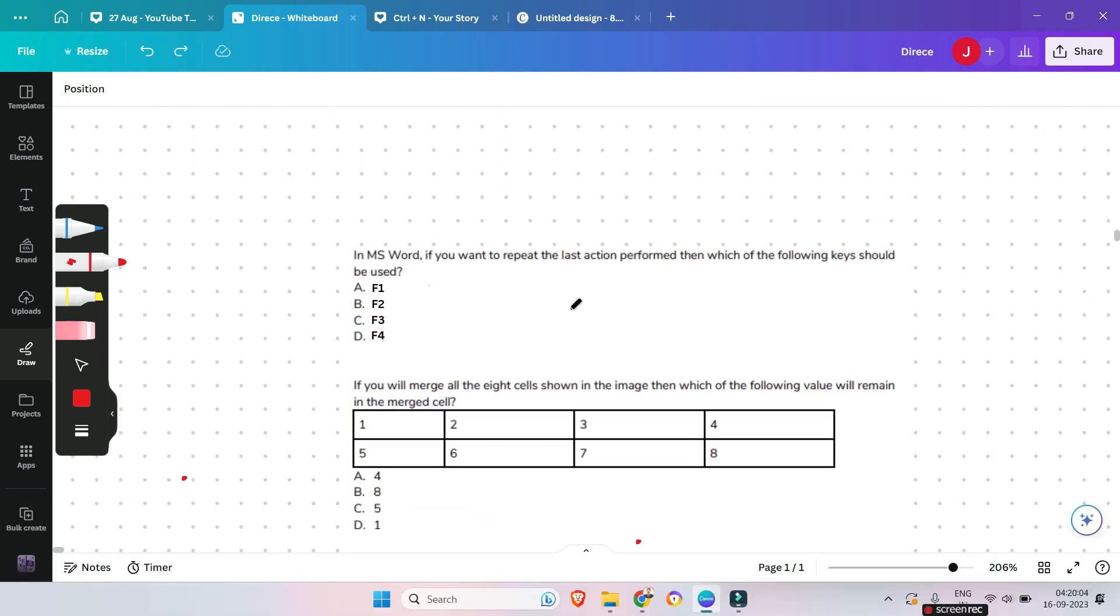in MS Word, if you want to repeat the last action performed, then which of the following keys should be used, F1, F2, F3 or F4? If you can answer then please give me answer in the comment section before I give answer. So, let's cross check if you are right or not. F4 will be the correct answer.